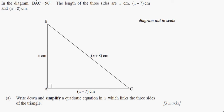So let's look at this. We have in the diagram angle BAC is 90 degrees, and the lengths of the three sides are x, x+7, and x+8. This is a pretty common problem with Pythagoras. They want to show that you can expand brackets or FOIL.